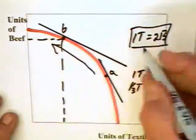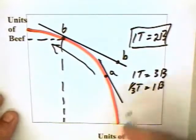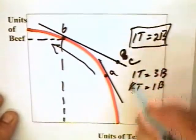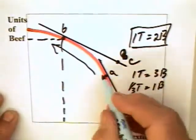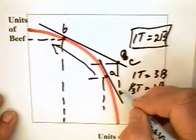And as a consequence, you might anticipate that the country can move to a point like C, in which case it can have more production of both goods.